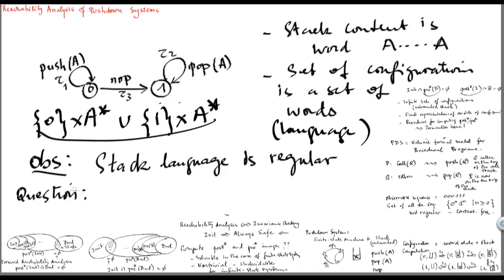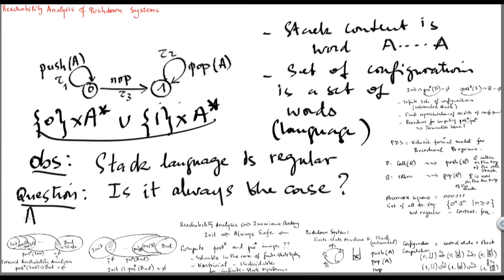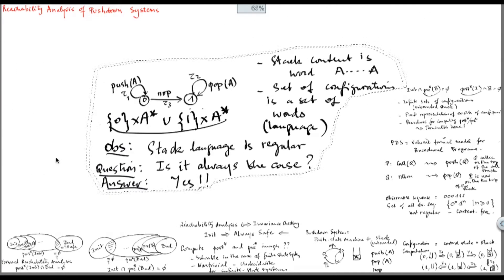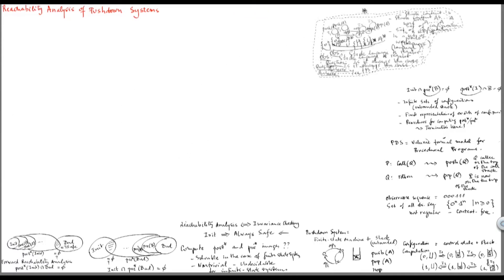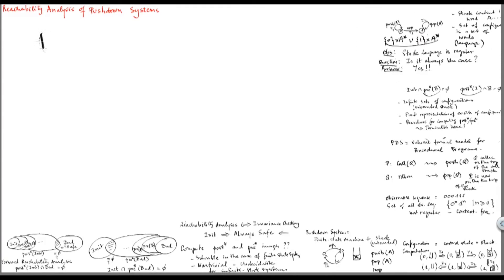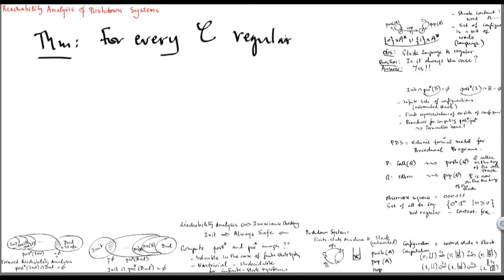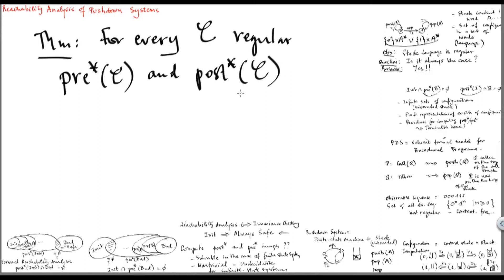An important question is whether this is always the case, and the answer is yes. The important fact about pushdown systems that makes them easy to verify is the following theorem: for every set of configurations C which is regular — given by some finite state automaton — the sets pre-star of C (all predecessors of C) and post-star of C (all successors of C) are also regular and constructible.